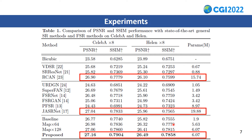In the experiments, we evaluated the proposed method on two datasets: CelebA and Helen. Two metrics, PSNR and SSIM, are used for evaluation. As shown in Table 1, we compared some state-of-the-art methods. It can be seen that the proposed method obtained the best PSNR and SSIM metrics on both datasets.